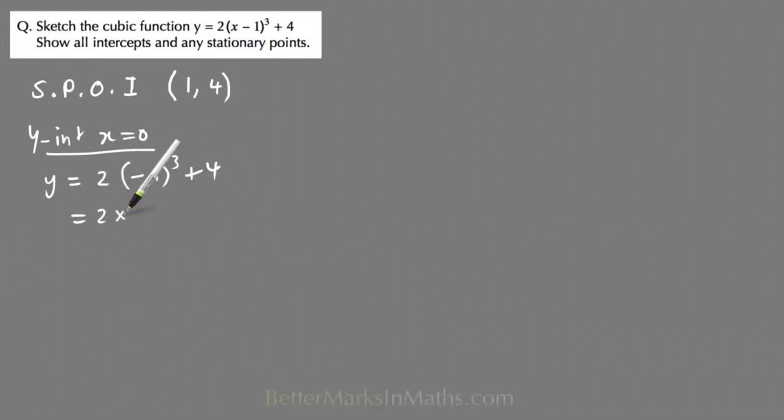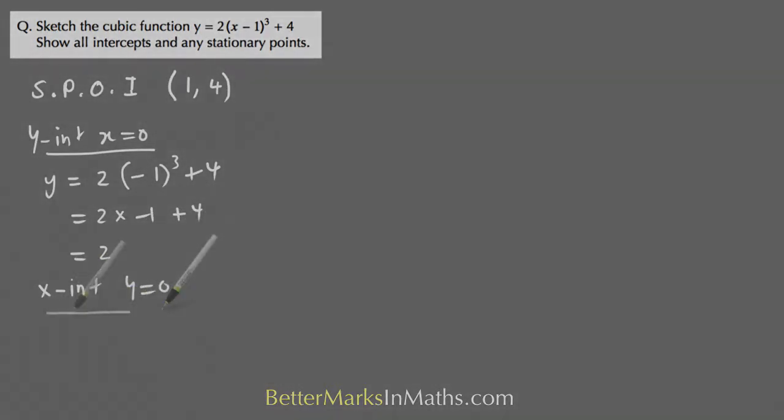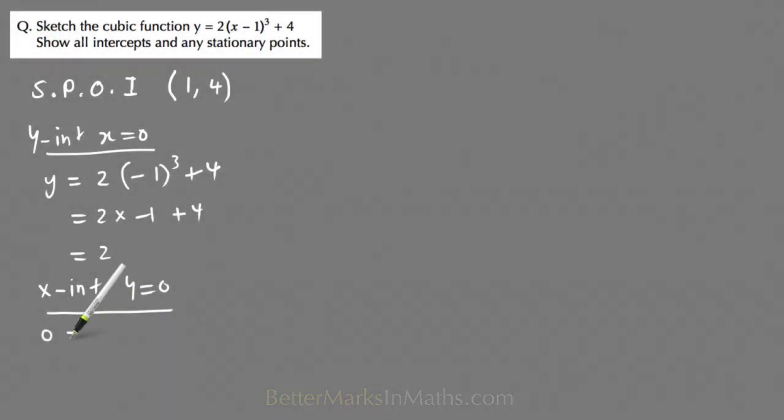This equals minus 2 plus 4 equals 2. And then the x-intercept by letting y equals 0, you get 0 equals 2 bracket x minus 1 cubed plus 4.